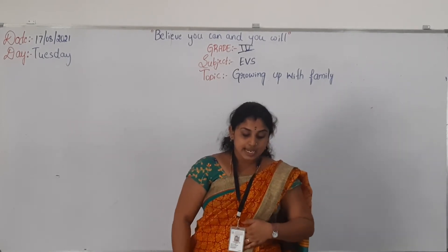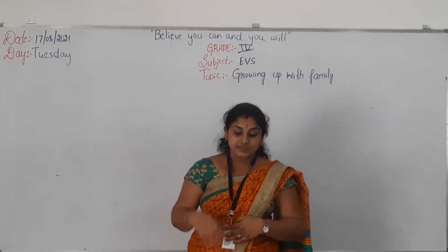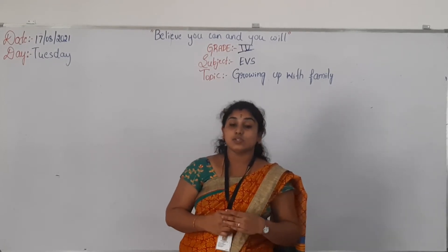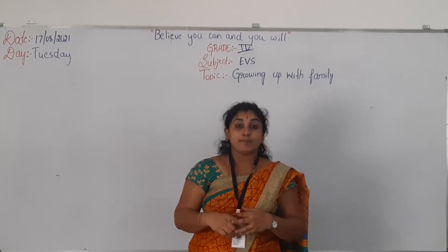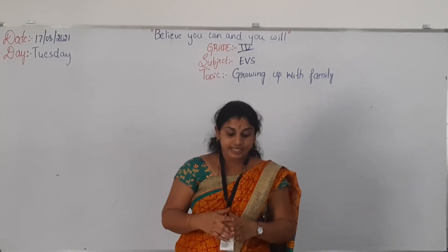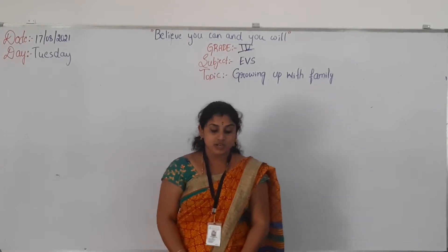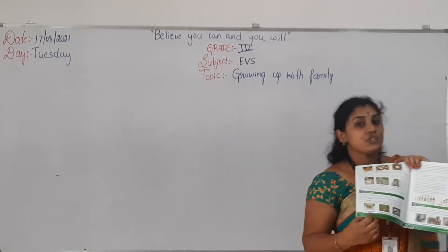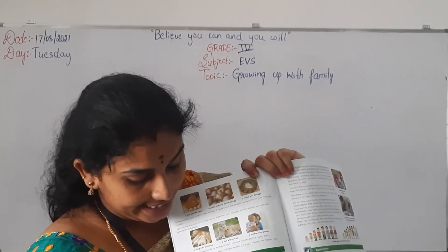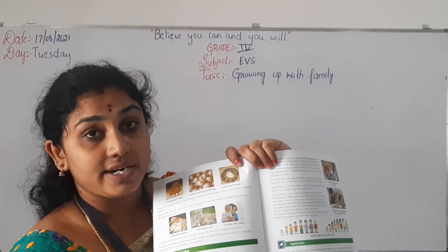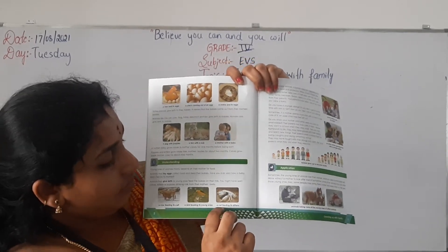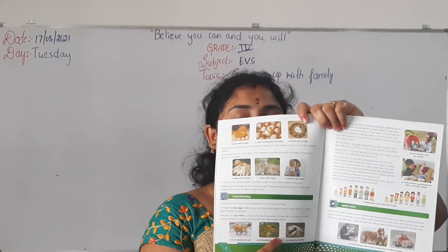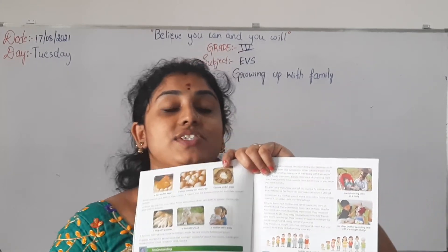Coming to the animals that give birth, they feed their babies on their milk. You might have observed cows with their calves. They used to feed their young - goats, kittens, and puppies are all drinking milk from their mother's body. Please open page number 2. Here you can observe some pictures - a cow feeding its calf, a bird feeding its young, and a cat feeding its kittens.